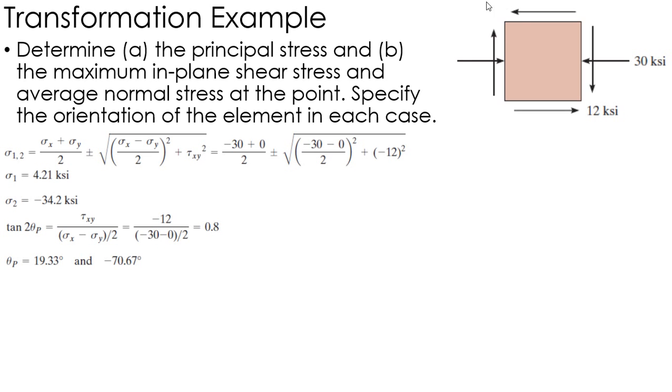I want to find the orientation of this. So I find the orientation of my principal stresses right here, and basically I get two potential equations or degrees. I get 19.33 and negative 70.67.